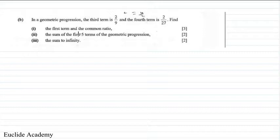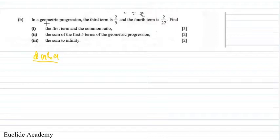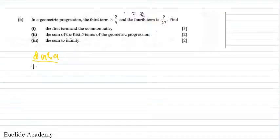We're going to find the first term and the common ratio. First, let's collect our data — what we have for the first term and what we have for the common ratio. The question says the third term is 2/9 and the fourth term is 2/27. You can pause the video, try to solve it yourself, and then play it afterwards to follow through.